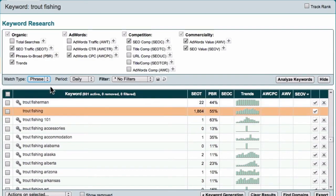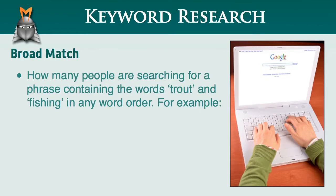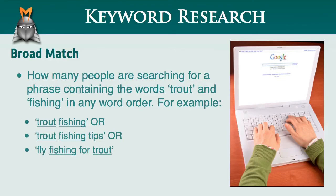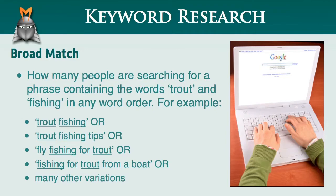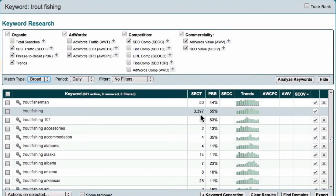Now finally, let's take a look at the broad match type. This time, the SEO traffic figure relates to how many people are searching for a phrase containing the words trout and fishing in any word order along with additional words. This would include phrases such as trout fishing tips, or fly fishing for trout, or fishing for trout from a boat, and many other variations. The two words trout and fishing do not have to be in the right order. So with match type set to broad, I can see that quite a few people per day are searching for a phrase that contains the words trout and fishing in any order along with other keywords.